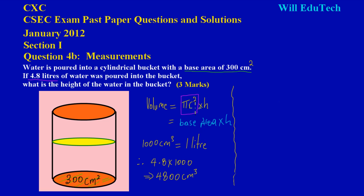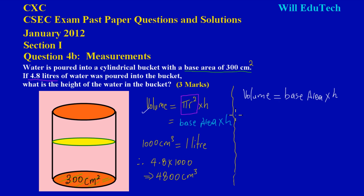With these pieces of information it's easy to calculate the height by substitution. We can say the volume equals the base area times the height — since the base area is the same as π r squared. Substituting the values: four thousand eight hundred centimeters cubed equals three hundred times the height we're trying to find.